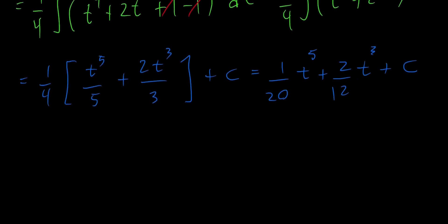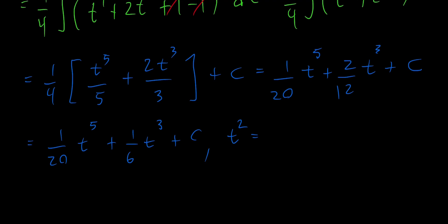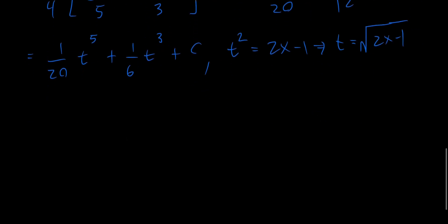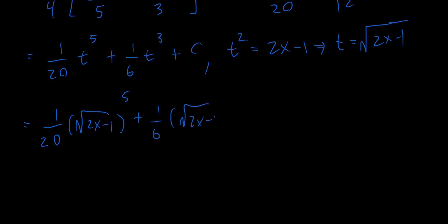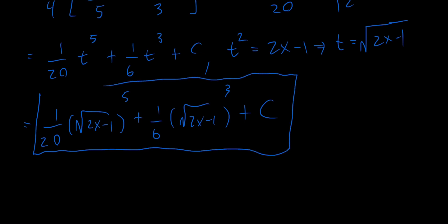And 2 over 12 simplifies to 1 over 6. So we have one over 20 t to the fifth plus one over 6 t cubed plus c. Substituting back, since t equals the square root of 2x minus 1, our final answer is one over 20 times the square root of 2x minus 1 to the fifth power plus one over 6 times the square root of 2x minus 1 to the third power plus c. This is the final result.